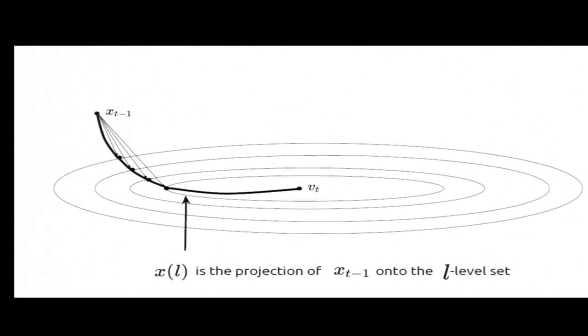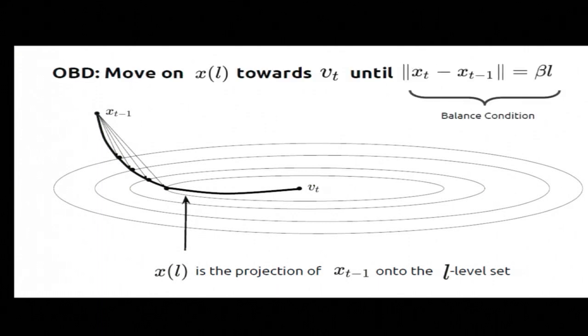Let's call the set of all possible projections x of l. It's this line, this curve that's the set of all projections. So I'll go ahead and tell you the algorithm right now. It's pretty simple. OBD says this. Let's start off at x_{t-1}, and I'll move on this line towards the minimizer until my switching cost is equal to my hitting cost up to this tuning parameter beta. So I'm going to balance these two different costs. And that gives us this three competitive algorithm in all dimensions.